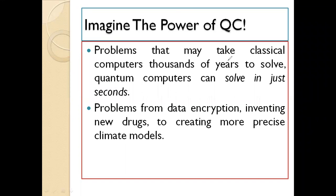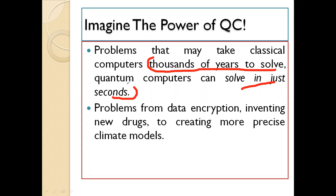A problem that may take a classical computer thousands of years to solve — that type of complex problem we can solve with the help of quantum computers in just a few milliseconds, or at most seconds. The reason is, as we discussed in the last lecture, the concept of superposition. That is what brings the extent of parallelism to quantum computation, making it possible for highly complex problems to be solved within seconds.